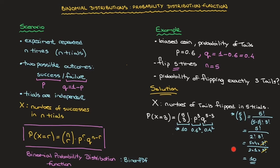If you're uncomfortable calculating binomial coefficients by hand, most of the time when dealing with binomial distributions we'll be given a calculator. Using our results, P(X = 3) = 10 × 0.6^3 × 0.4^2 = 10 × 0.216 × 0.16 = 0.3456.